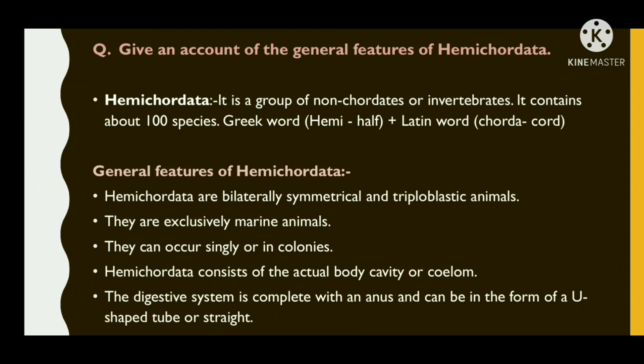'Hemi' is a Greek word which means half, and 'chordata' is a Latin word which means cord. General features of hemichordata: hemichordates are bilaterally symmetrical and triploblastic animals. They are exclusively marine animals that can occur singly or in colonies.